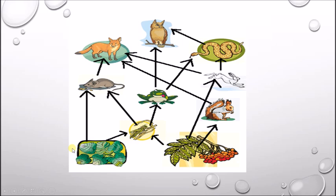In reading the food web, we start at the bottom with the producers and follow the energy through the arrows from one organism to another. Remember that each arrow means that this organism is eaten by the organism being pointed to. So these plants are eaten by this squirrel, and this squirrel is eaten by this fox. You can see how there are multiple ways to go. That concludes our presentation on how to read a food web. Thank you.